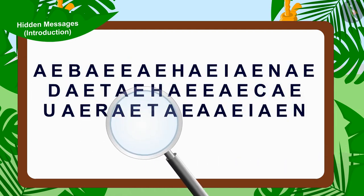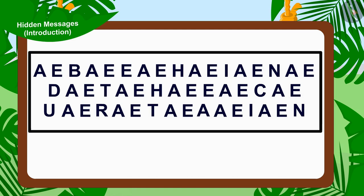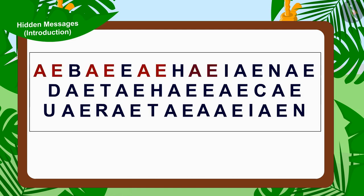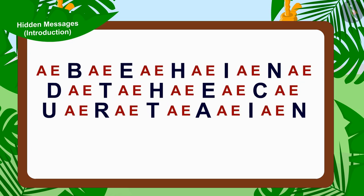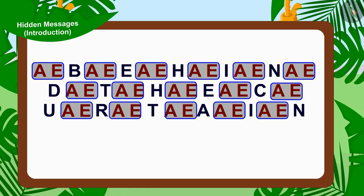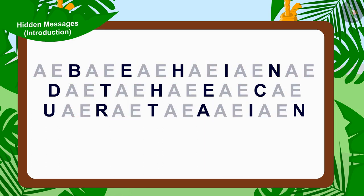Children, can you see some form of repetition here? The alphabets A and E are being repeated every time. And in every repetition, a new alphabet is getting added after A, E. If we only write the alphabets coming after A, E, excluding the alphabets A and E, we will find this written.